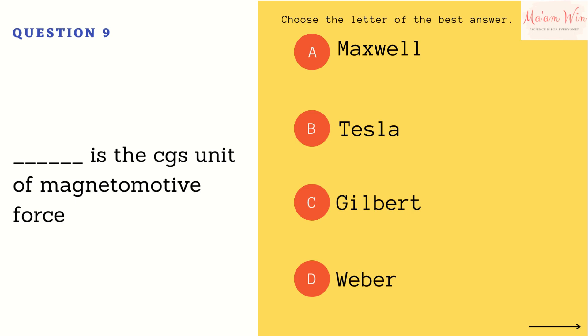Question number nine: blank is the CGS unit of magnetomotive force. Letter A, Maxwell. Letter B, Tesla. Letter C, Gilbert. Letter D, Weber. Choose the letter of the best answer.